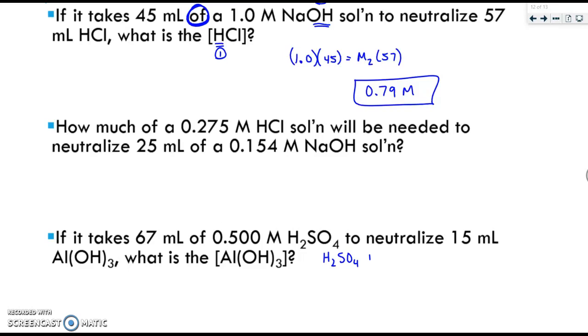So H₂SO₄ plus Al(OH)₃ produces a salt and water. The salt is going to be Al₂(SO₄)₃ and then water. So what you'll need to do for this one is you'll need to balance it first, and then do solution stoichiometry.